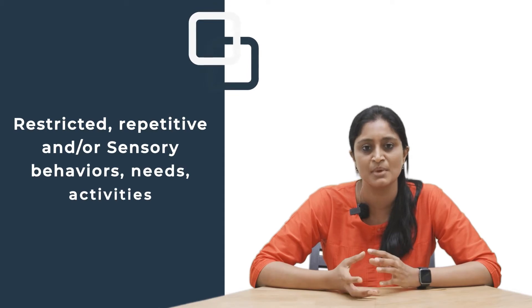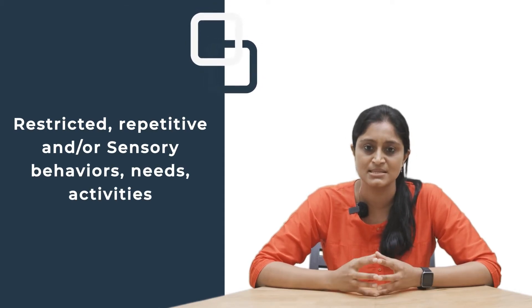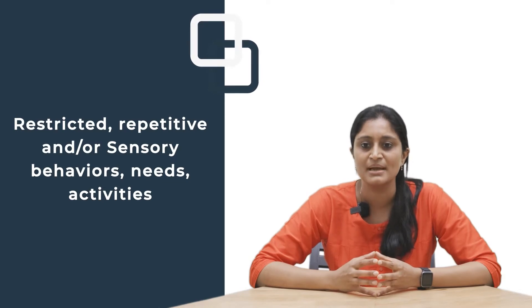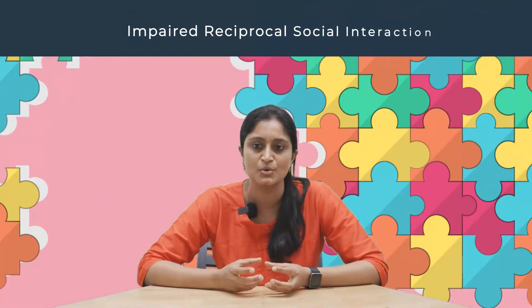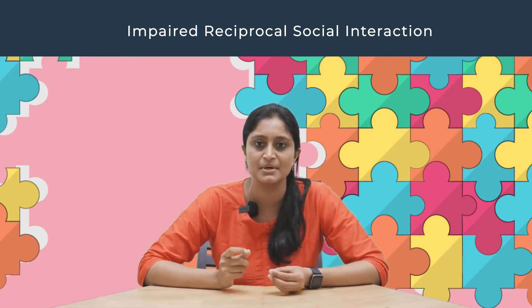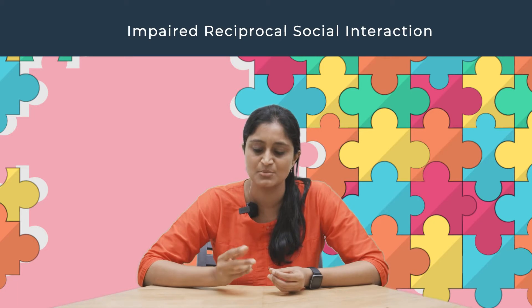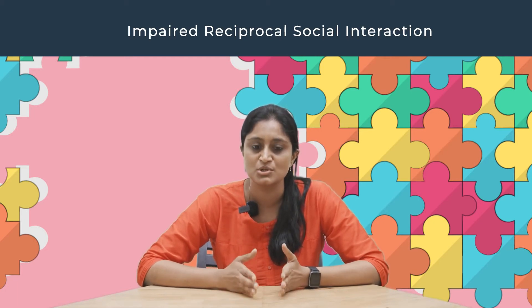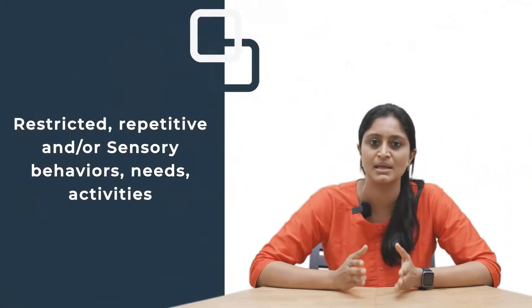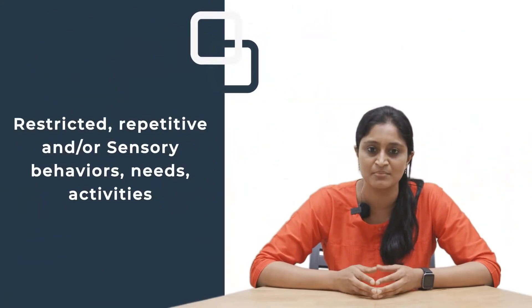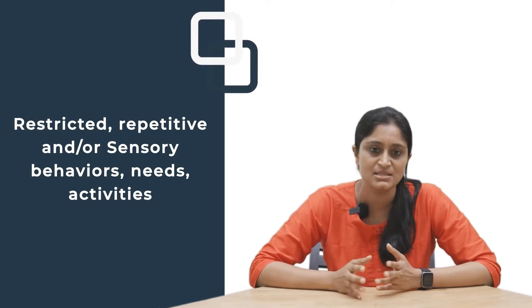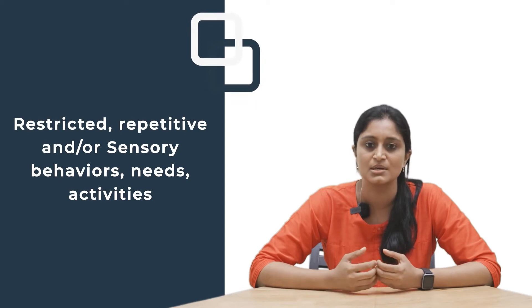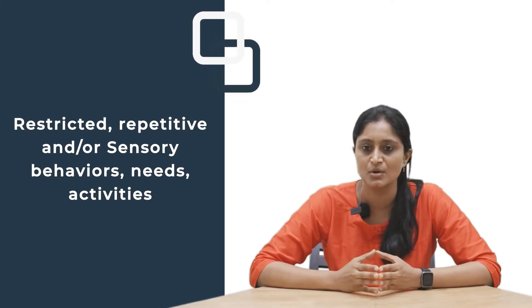The third symptom cluster is restricted and repetitive patterns of behavior, which may or may not be accompanied by sensory behaviors. Your child might have certain motor movements or sounds they keep repeating, or use an object — like a piece of string, paper, toy wheels, or an eraser — repetitively. Some children insist on sameness, eating the same food and wearing the same clothes daily, requiring an unchanging, predictable routine. Any change can trigger significant anxiety.